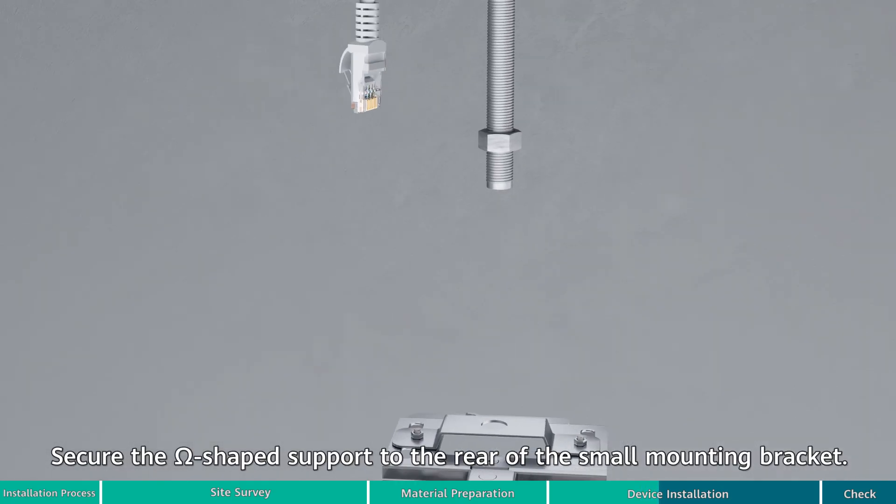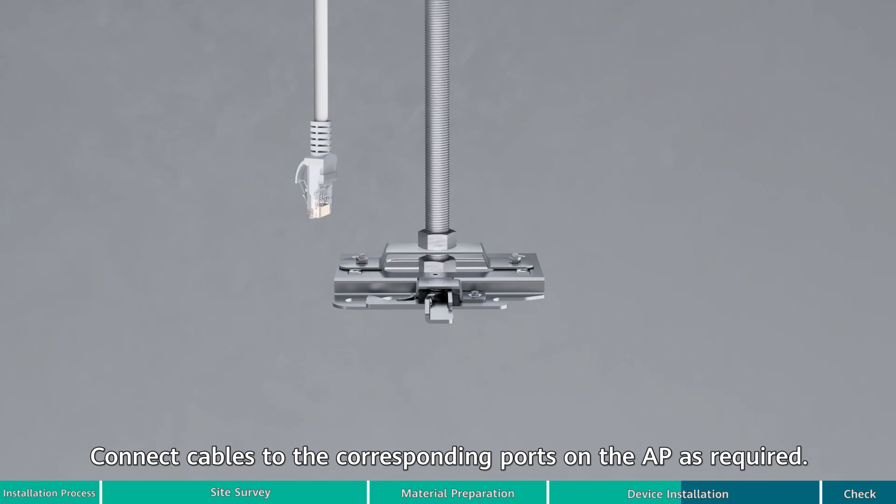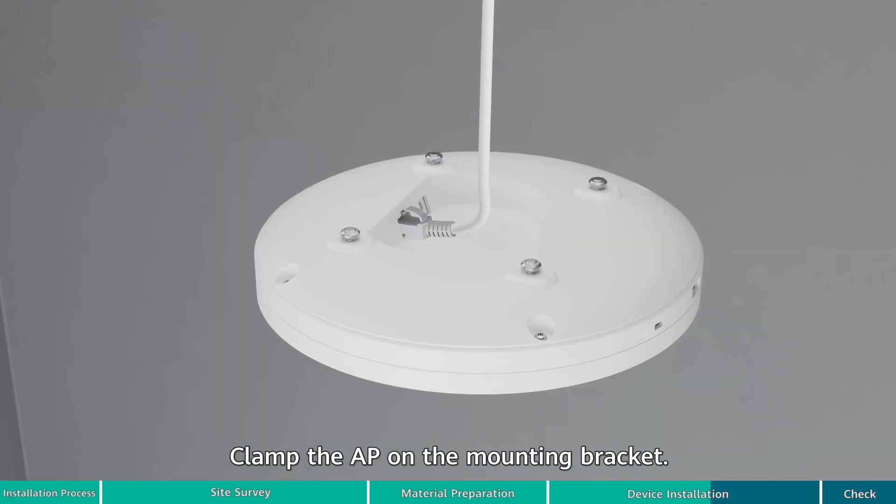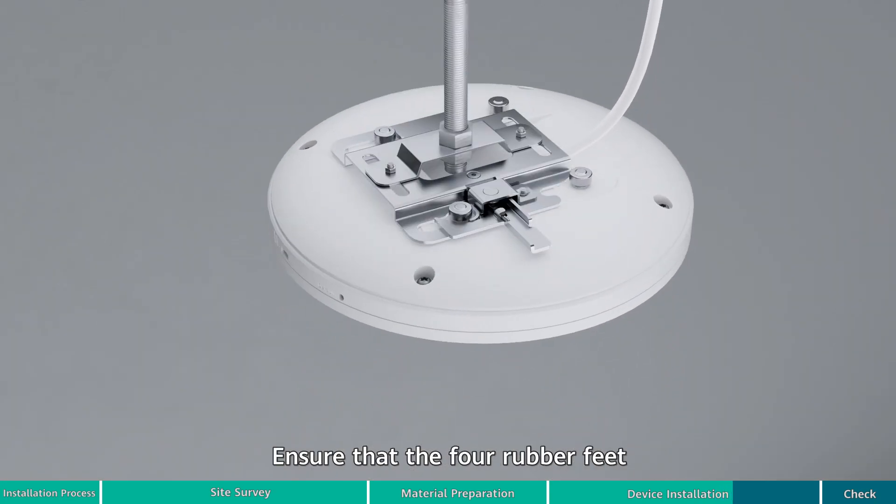Secure the omega-shaped support to the rear of the small mounting bracket. Connect cables to the corresponding ports on the AP as required. Clamp the AP on the mounting bracket, ensuring that the four rubber feet on the rear of the AP fit into the mounting holes.